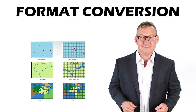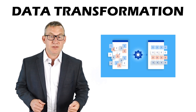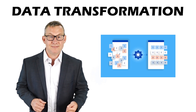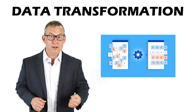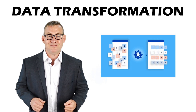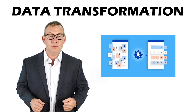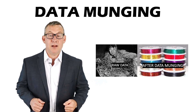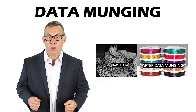The term data transformation can have a different meaning to people who don't work in the field of GIS. It can refer to moving data from one data structure to another. Non-GIS data transformation can involve processes such as data munging, which is transforming data from a raw form to an organized form for analysis.